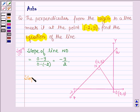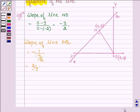Now slope of line P2 which is perpendicular to the line NO is given by -1 upon (-9/2). That is 2/9. Since if M1 and M2 are the slopes of two perpendicular lines then the product of their slopes is equal to -1.